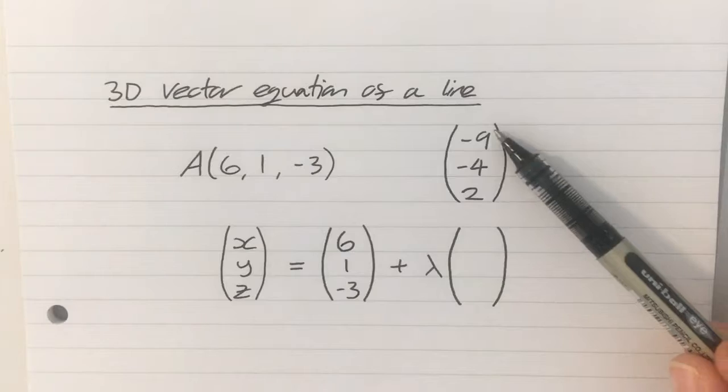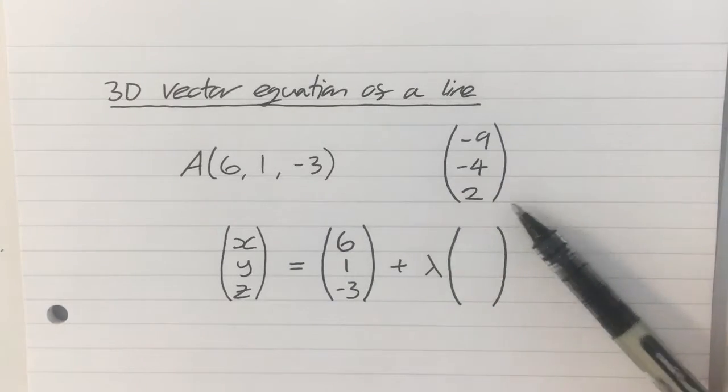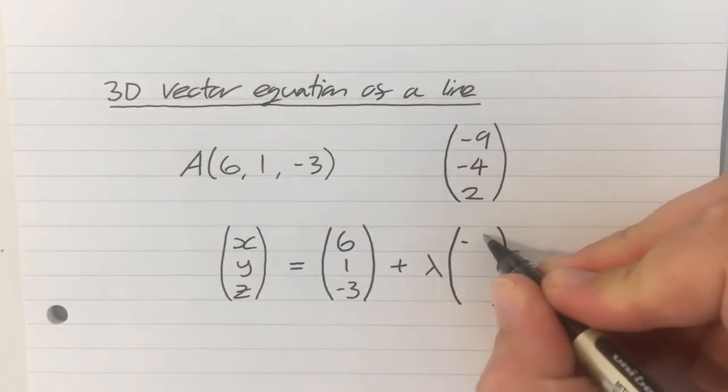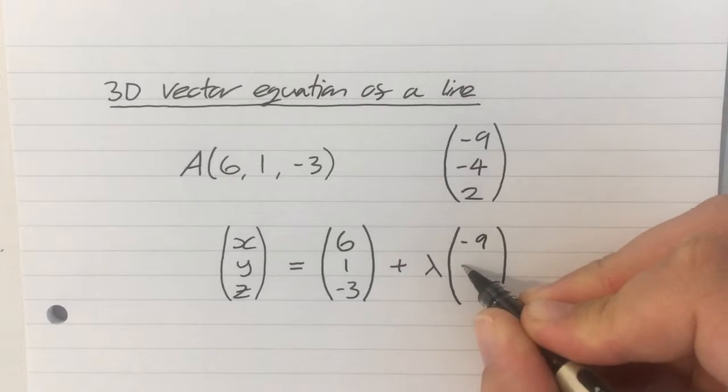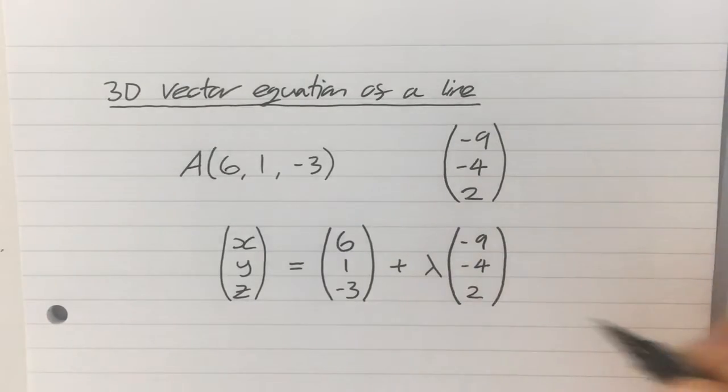And then we're told the direction of the line is moving in this direction, so I can just put that vector in here, minus 9, minus 4, 2. And there we go, that's the vector equation of the line that goes through this point here in that direction. Not particularly taxing.